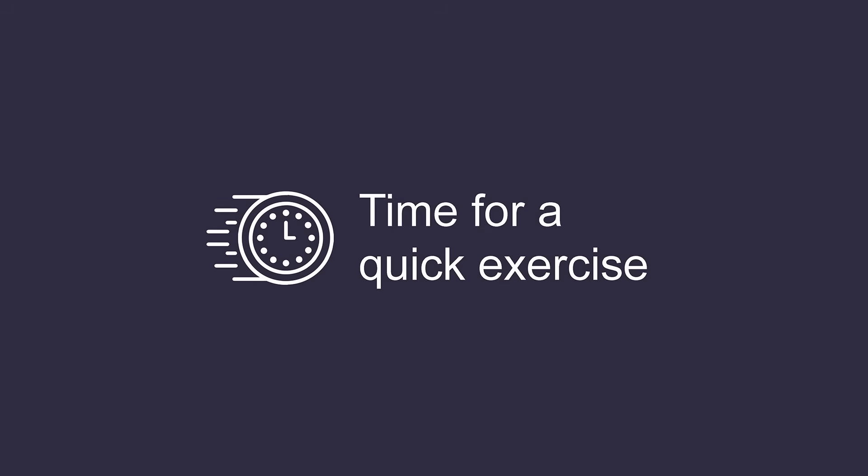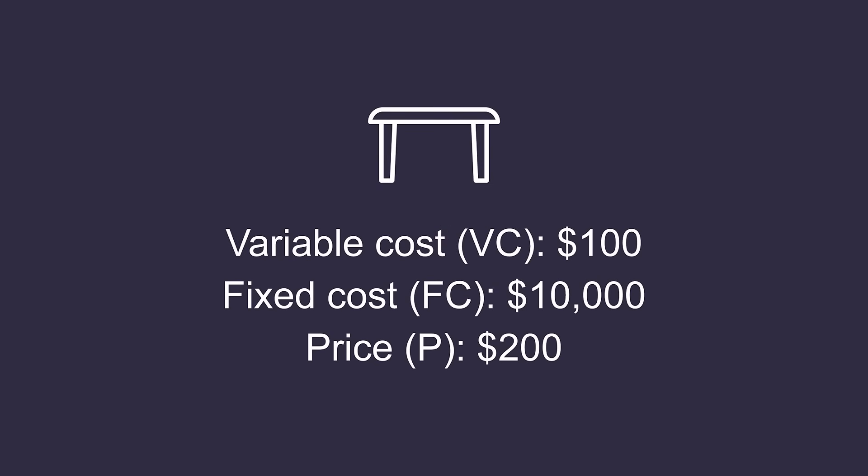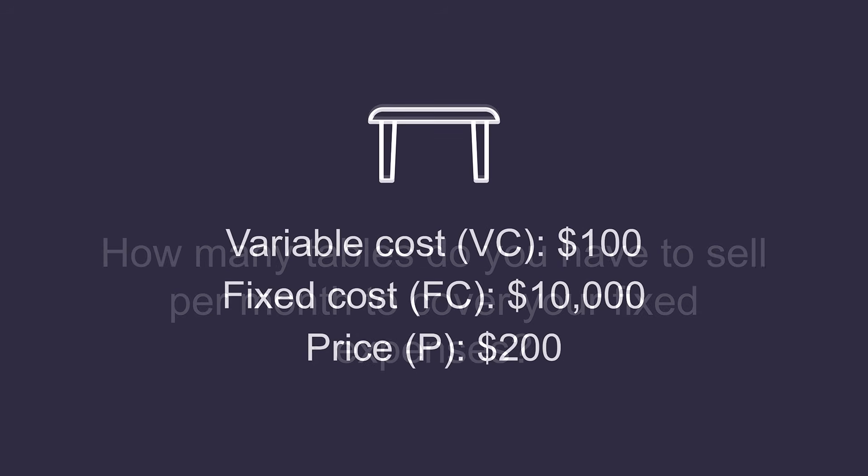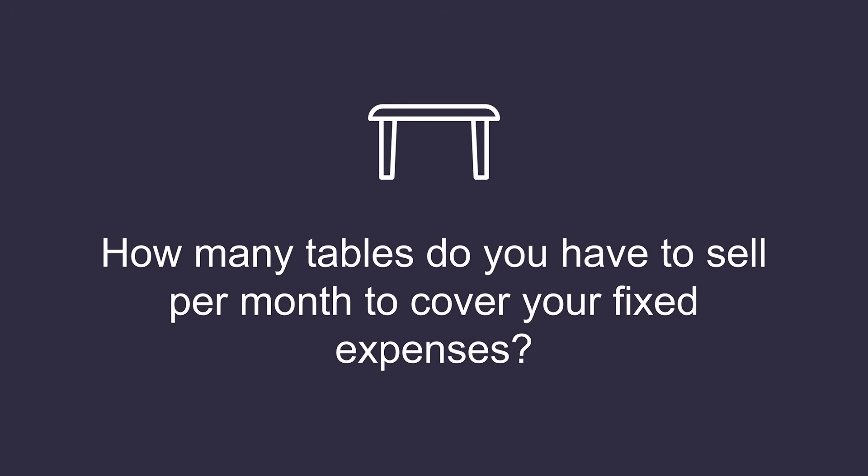Let's say you are in the business of selling furniture. The cost of manufacturing and assembling a table — that is the variable cost for a single table — is around $100. Your monthly fixed cost, that is rent, salaries, general services, etc., is around $10,000. You want to sell the table at a price of around $200. How many tables do you have to sell per month to cover your fixed expenses?